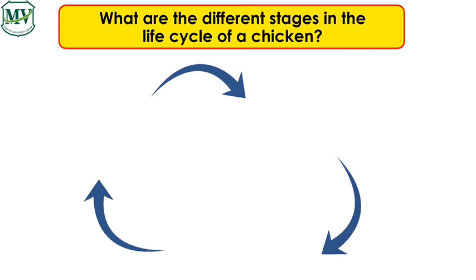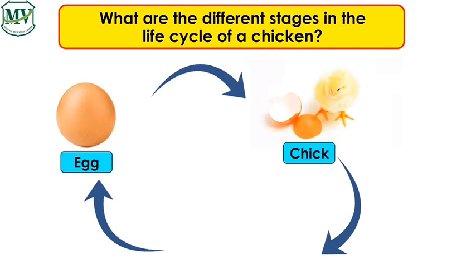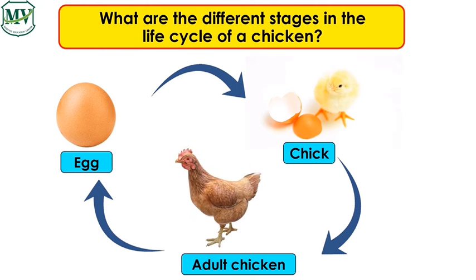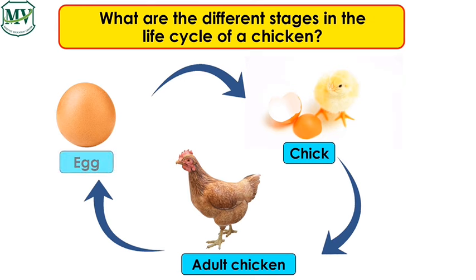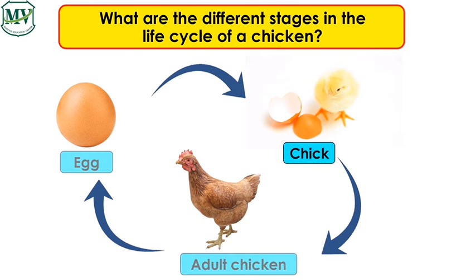Now let's have a quick review. What are the different stages in the life cycle of a chicken? Egg. Chick. Adult chicken. The life cycle of a chicken starts from an egg. A chick hatches from the egg. The chick then grows into an adult chicken.